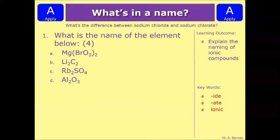Okay, let's have a look at a question then. So this is a nice and simple one. What is the name of the element below? So you need to have a look, think about what we've just been through with the ending -ide and -ate, and figure out for A, B, C, and D what the names of the products are. Pause the video, have a go, and we'll see how you've done in a minute.